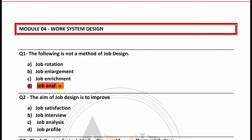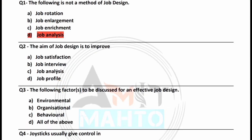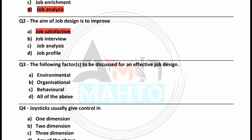The aim of job design is to improve job satisfaction — options were: job certification, job interview, job analysis, job profile — so the right answer is job satisfaction. The following factors are to be discussed for an effective job design: environmental, organizational, behavior, or all of the above. The right answer is all of the above.